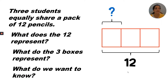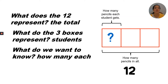This is a tape diagram that has three boxes. The three boxes represent the students. It has a label at the bottom. The 12 represents how many pencils in all. We want to know how many pencils each student gets.